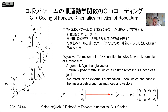We have three joints. The first joint angle is theta sub one, the second joint is theta sub two, and the third joint has the angle theta sub three. This is our hand tip. This is a 2D XY plane robot arm, and the objective of this code is to implement a C++ function to solve the forward kinematics of this robot arm.